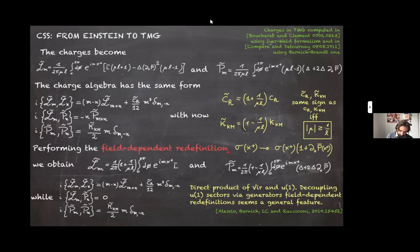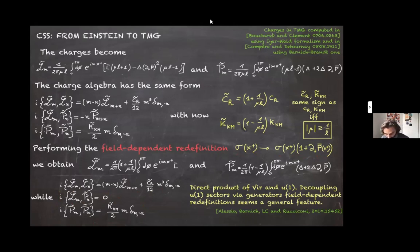Furthermore, one can perform a field-dependent redefinition of the symmetry generators sigma of the theory such that the semi-direct product decouples into a direct product of the two sectors. After redefining sigma, the Virasoro sector is completely disentangled from the U(1) Kac-Moody sector, while the central charges take the same values. This feature — that a U(1) sector can be disentangled from a semi-direct product into a direct product — appears to be a general feature whenever one has a semi-direct product with a U(1), and I'm trying to understand it better on general grounds.